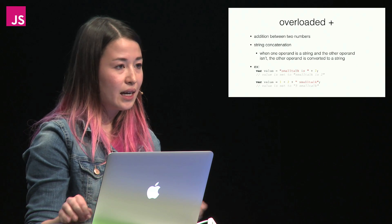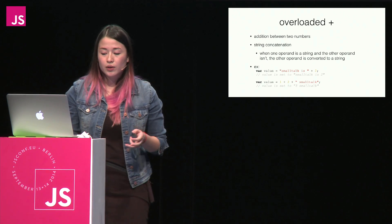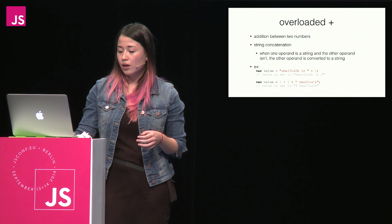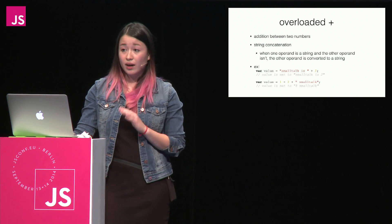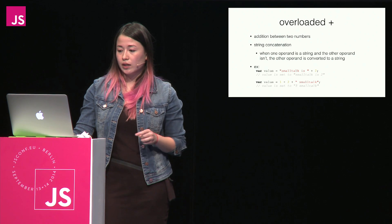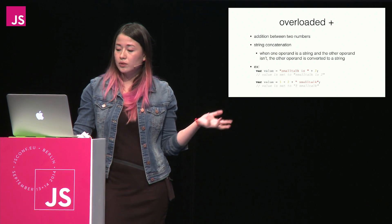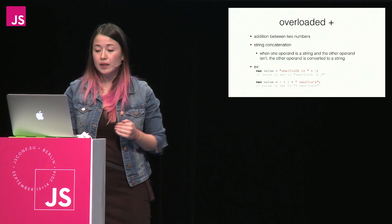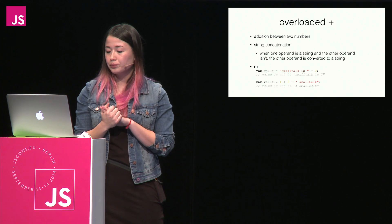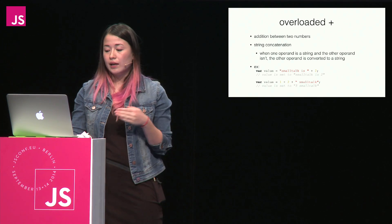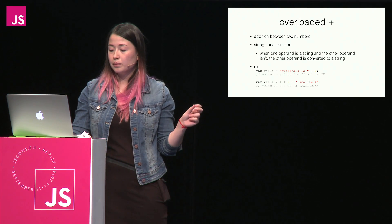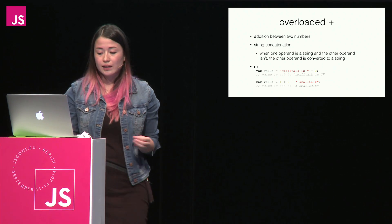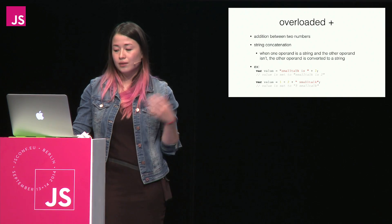The interesting operator to look at here is the addition sign. It's overloaded in JavaScript — not only can it do addition between two numbers, it can also do string concatenation. When one operand is a string and the other isn't, the other operand is converted to a string. In the first example, var value equals 'small talk is' + 2 — value is set to 'small talk is 2' because the integer 2 is converted to a string and concatenated. In the second example, 1 + 2 are added together first, yielding 3, which is then concatenated to 'small talk', returning '3 small talk'.